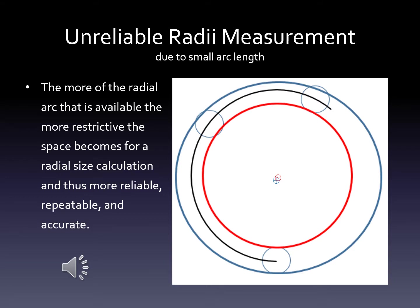Here we demonstrate that the opposite provides more reliability and less variation. The more of the radial arc length that is available, the more restrictive the space becomes for a radius size calculation, making it more reliable, repeatable, and accurate. The middle arc — about 75% of a total circle — goes through an area of uncertainty, and then we have two sets of variation through those same areas of uncertainty on the extreme high and low sides. Those differences are much less than in the previous slides where we had small amounts of arc length available.